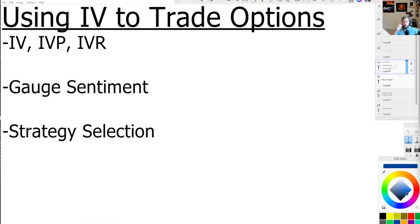The very first thing — you have to promise me that when I put this first piece up, you're not immediately going to run away, because it does include a formula, but trust me, we'll get through it. I'm not going to spend a bunch of time on the formula. I just want to talk about implied volatility, implied volatility percentile, and implied volatility rank, because traders use all of them interchangeably and they're all different. It's important to understand the difference, because in my opinion, one of them is far more useful than the other two.